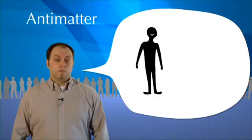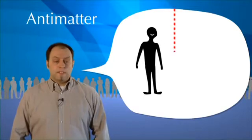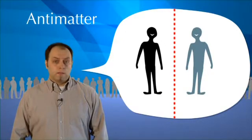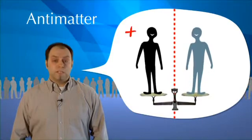For each particle discovered so far by a physicist, there is an antiparticle. It's like a mirror particle having the same mass with the opposite electric charge, a bit like your image in a mirror.